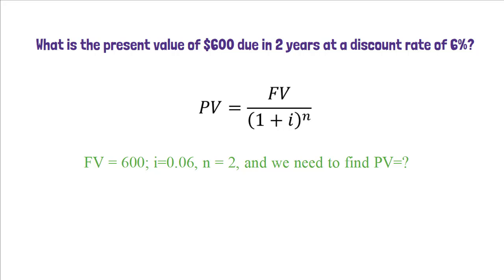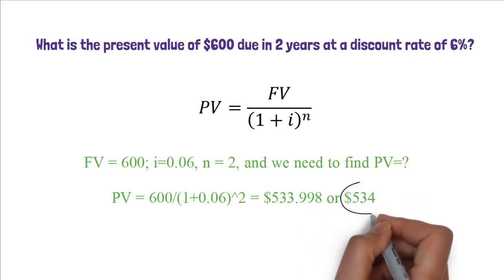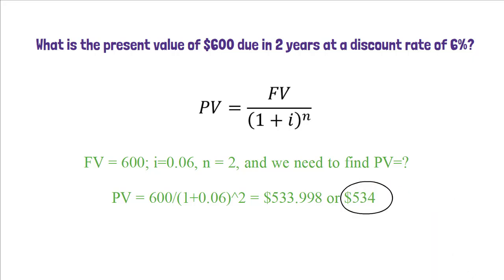When you apply the formula, you get PV equals 600 divided by 1 plus 0.06 to the power 2, which is 533.998, or approximately 534.